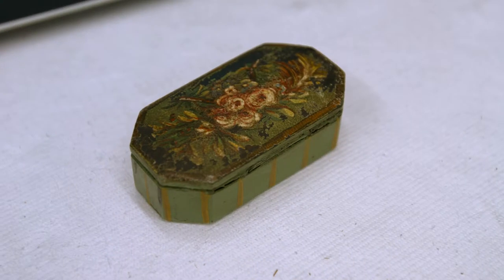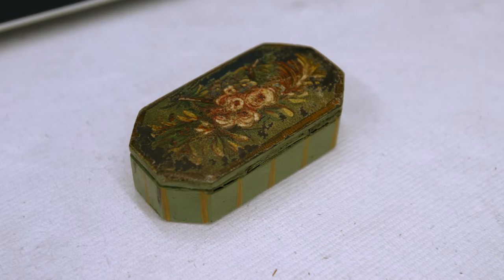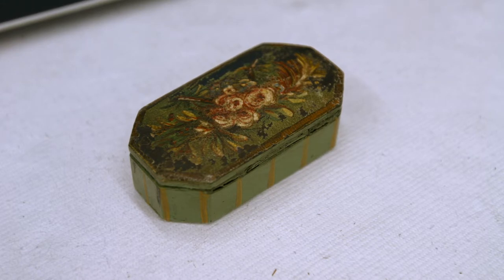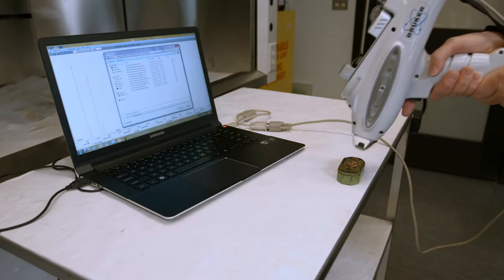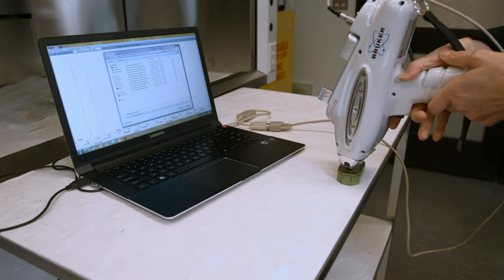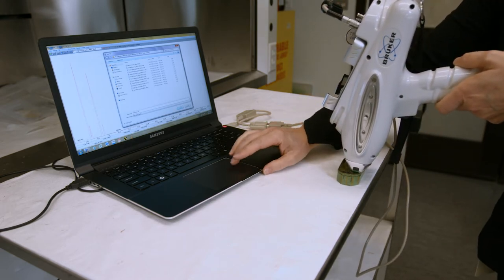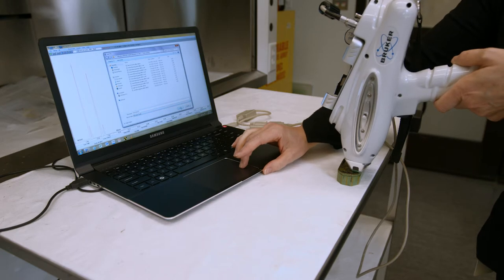This is a box that we suspect might have arsenic on it. So I'm going to use the PXRF to see if arsenic will show up in our spectra. So like I said, what's great about this is it's non-destructive. So I just have to lay the instrument on the box and press OK.